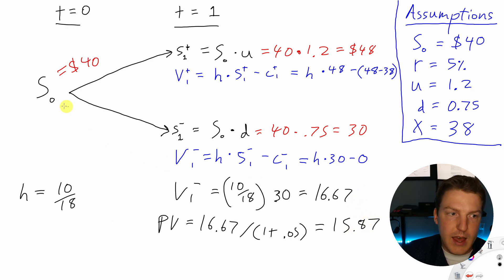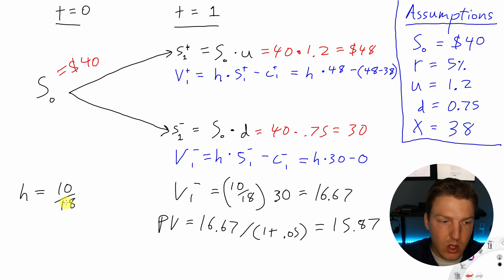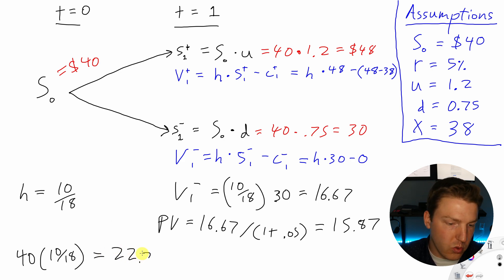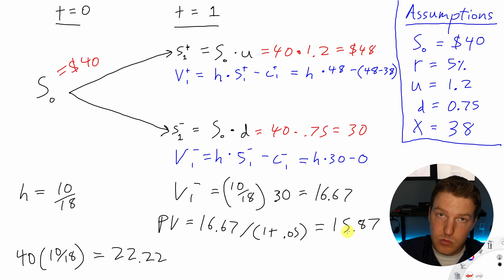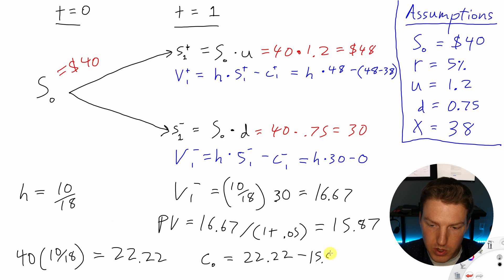At time zero, the total portfolio present value is $15.87. We also know we purchased 10/18ths of a share at $40, so the value of stock held equals 40 times (10/18), which is $22.22. The difference must be the price of the call option: $22.22 minus $15.87 gives a call option fair value of $6.35.